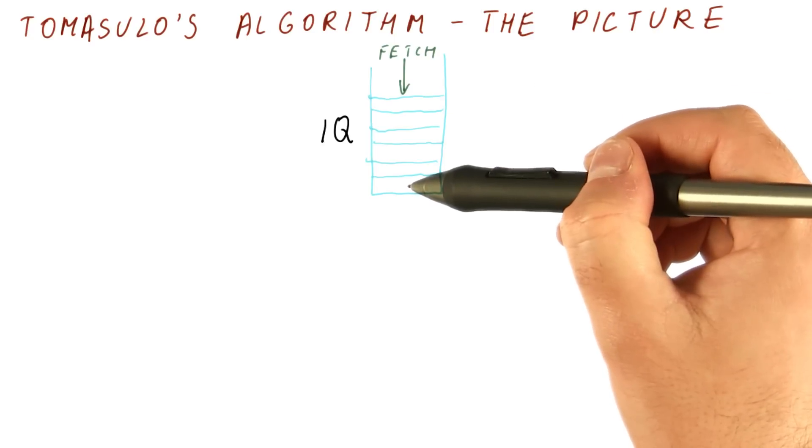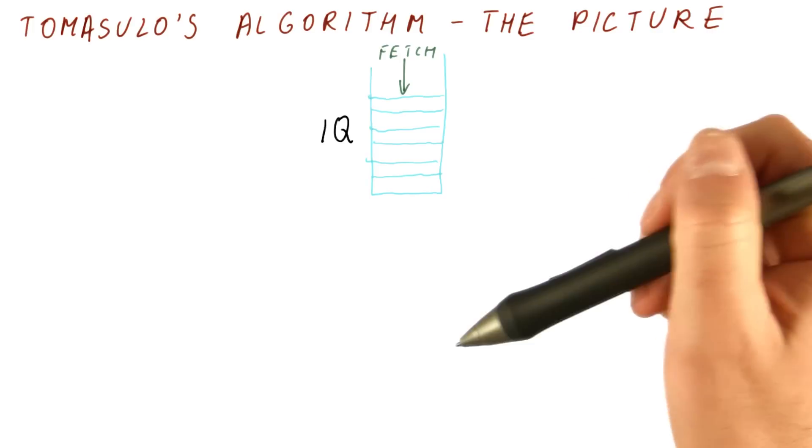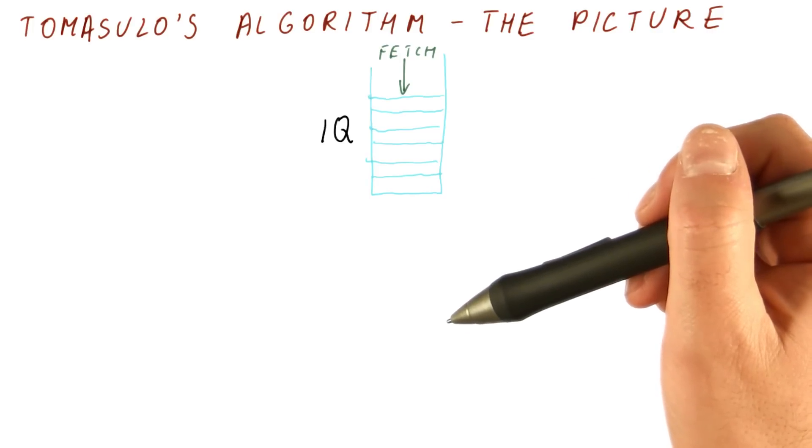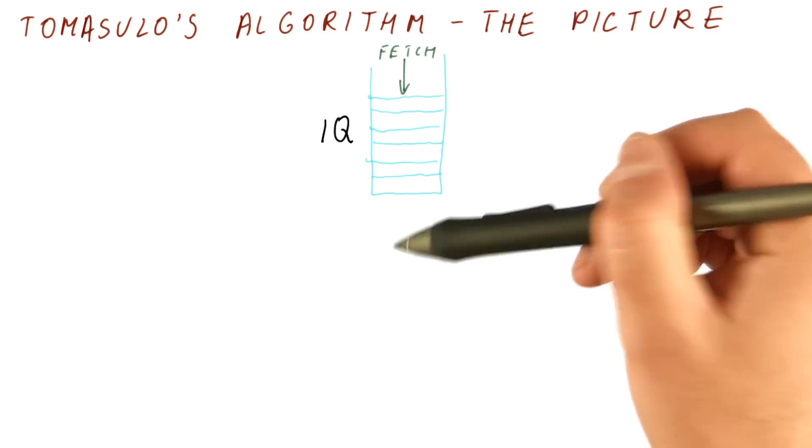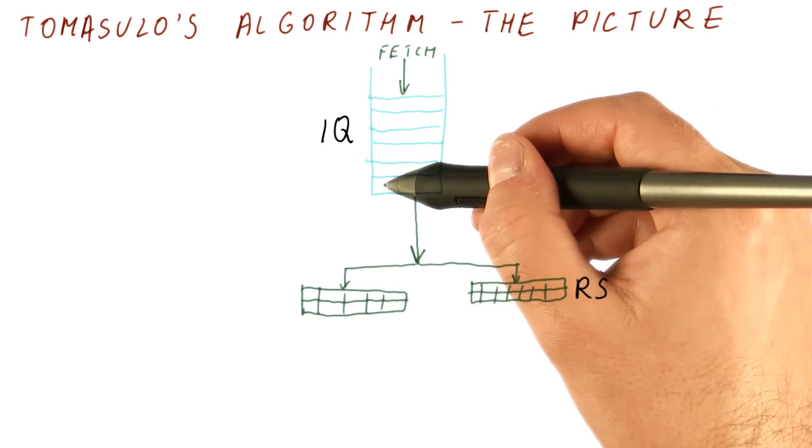This is the oldest instruction, the next one, the next one, the next one. We will be dropping these instructions into the Tomasulo's algorithm machine in the order in which they came. We always grab the next available instruction from the instruction queue.